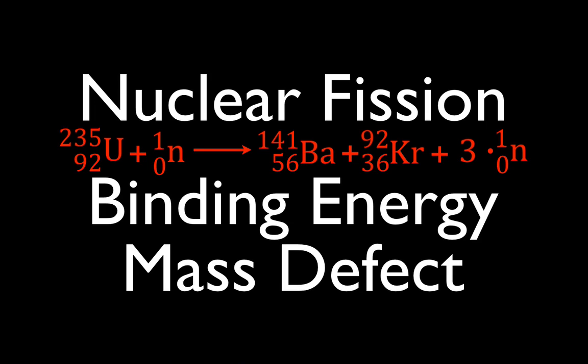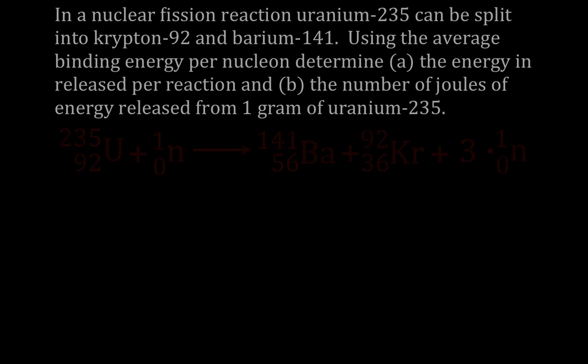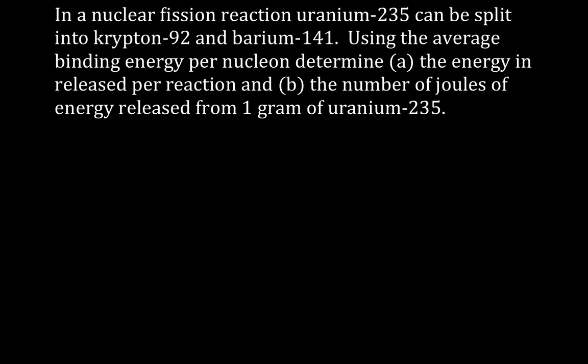The problem states that in a nuclear fission reaction, uranium-235 can be split into krypton-92 and barium-141 — those are one possible pair of products. We're going to determine, using the average binding energy per nucleon, the energy released per reaction of uranium-235 and the number of joules of energy released from one gram of uranium-235.